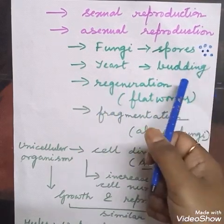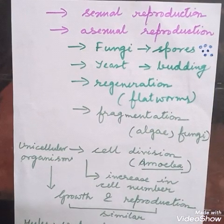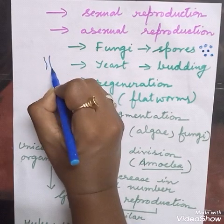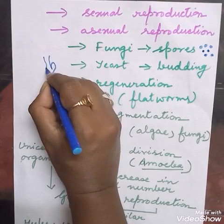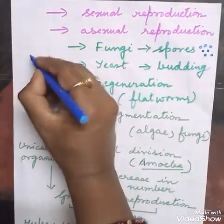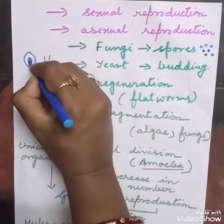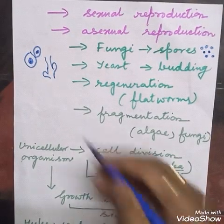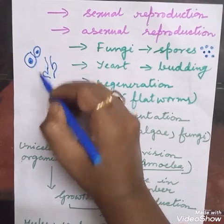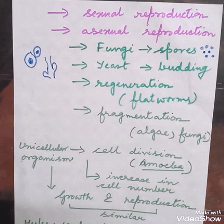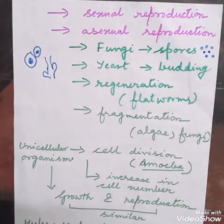Yeast can produce another individual by the process of budding. A bud is an extra growth — suppose this is the organism, there will be some extra growth, which is called the bud. Suppose this is a unicellular organism, there is a cell and another extra growth will grow here, called the bud. This bud will get the suitable condition and will develop into a new plant. The process is called budding.